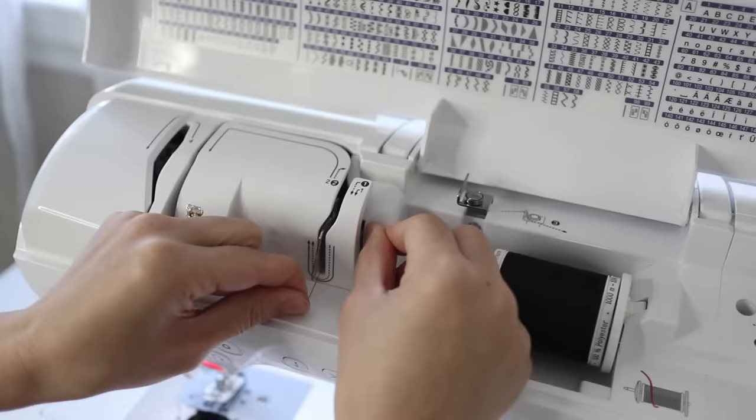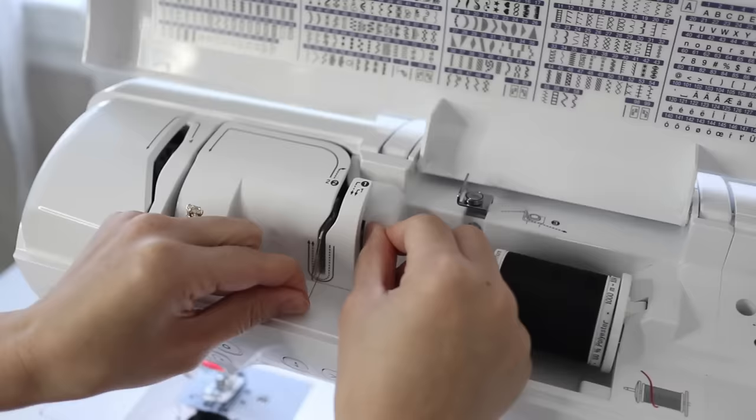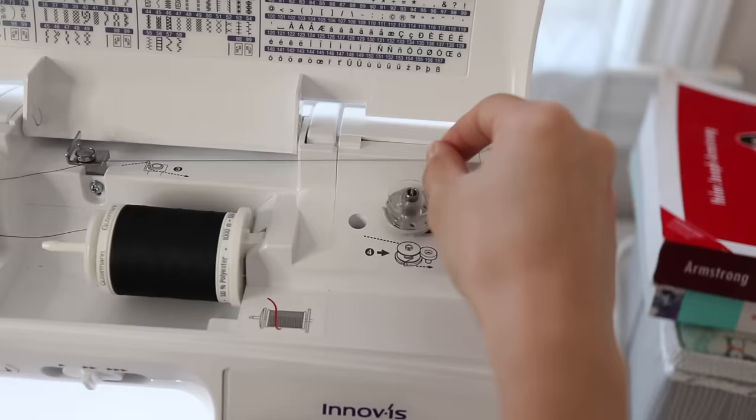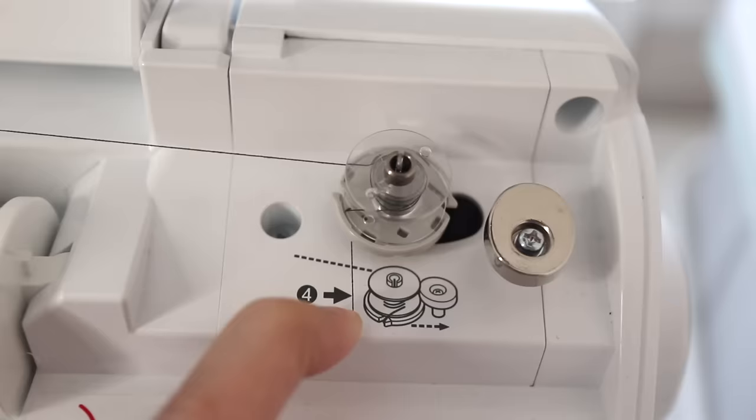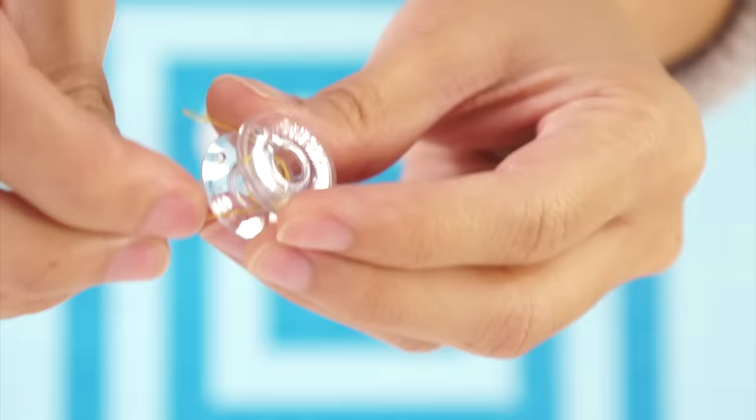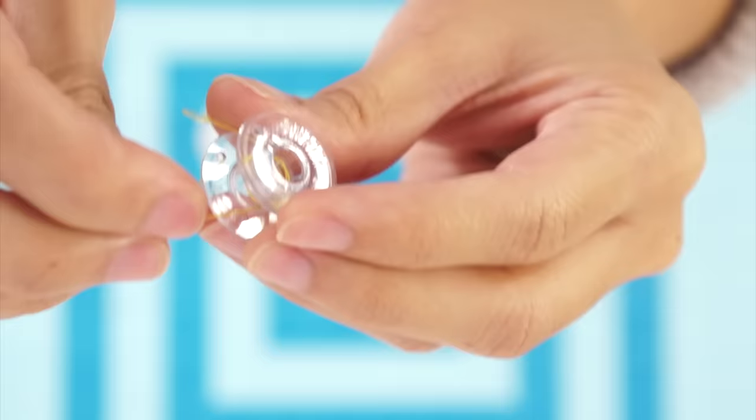Once my bobbin is in place I follow the arrow and bring my spool of thread all the way around to my bobbin and wrap the thread around a few times to hold it in place. My machine actually has this cool thread cutter right here so I just slide it there after wrapping the thread a few times. You can also place the thread into one of the holes in your bobbin to keep it out of the way once it starts winding.